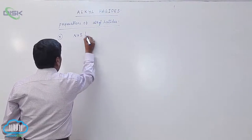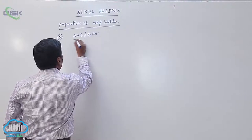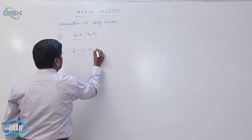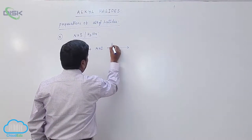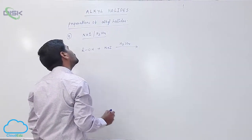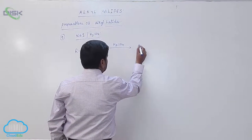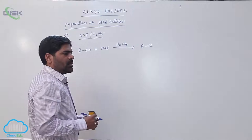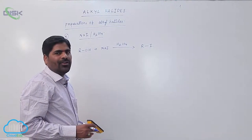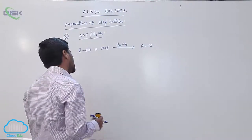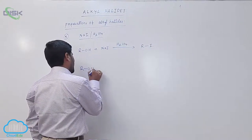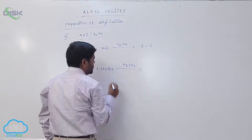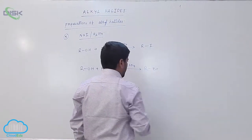Sodium halide in the presence of sulfuric acid reacts with an alcohol. Sulfuric acid acts as a catalyst in this case — it promotes the formation of the halonium ion. For example, ROH reacts with sodium bromide in the presence of sulfuric acid to form RBr.